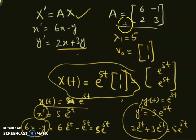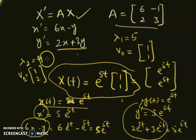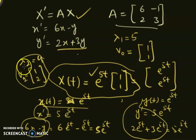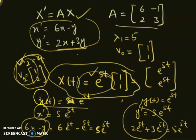There is another eigenvalue as well: lambda_2 = 4, with corresponding eigenvector v2 = [1, 2]. From this we get another solution. So one solution comes from (lambda_1, v1) and another from (lambda_2, v2). With these two solutions, you can solve the entire system. The general solution will be the linear combination of these two particular solutions.